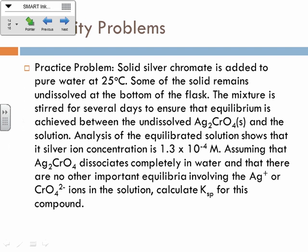Practice problem: solid silver chromate is added to pure water, and some solid remains undissolved — that means it's a saturated solution, so we're doing equilibrium. The mixture is stirred for several days to ensure equilibrium is achieved. Analysis shows the silver ion concentration is 1.3×10⁻⁴. Assuming it dissociates completely with no other important equilibria, calculate the Ksp. We probably want to make an ice table — for most equilibrium problems, that is the answer.